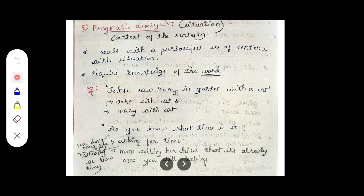The fifth representation or fifth level of NLP is pragmatic analysis. Pragmatic analysis deals with the situation, or the context of the sentence — in what context the sentence is appearing. This is what pragmatic analysis tells us. The basic idea is that it depends on the situation; it is situation-based, and it deals with the purposeful use of a sentence with situation.